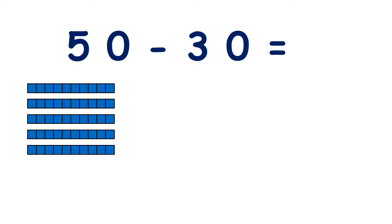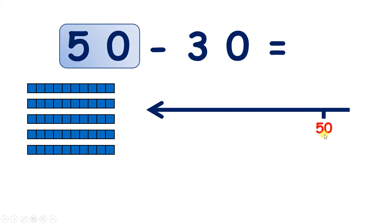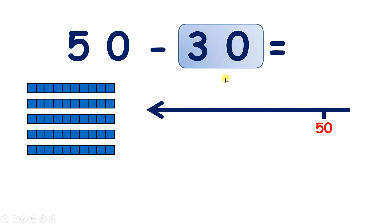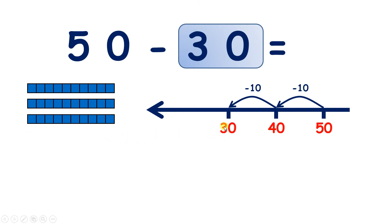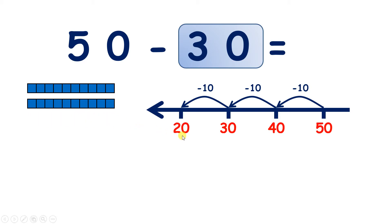Now 50 take away 30. So we start with 50 — let's write 50 at the end of our number line. And we're subtracting 30, which is three tens. So if we subtract one ten, we have 40. If we subtract two tens, we have 30. And subtract three tens, and we have 20.